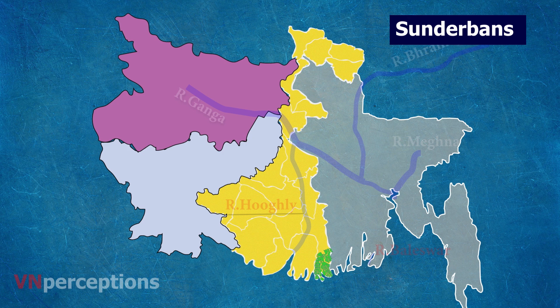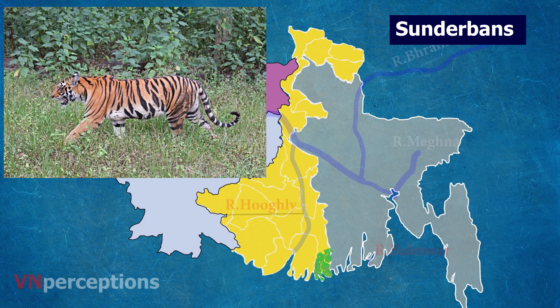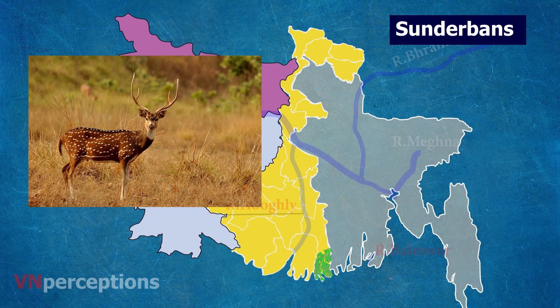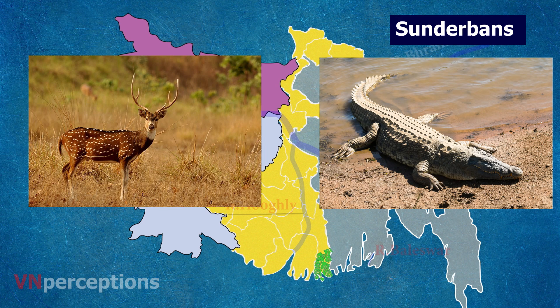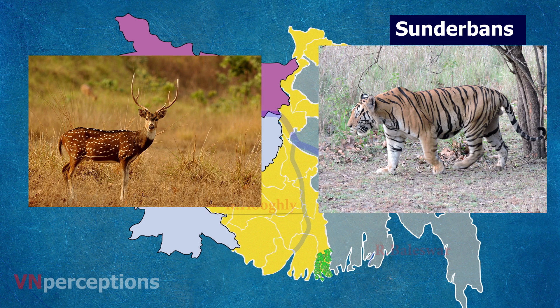This region is famous for the Royal Bengal Tiger. Apart from that, it has around 64 species of birds. Spotted deer, crocodiles and snakes are also seen here in plenty. It is estimated that there are now 400 Bengal tigers and about 30,000 spotted deer in this area.